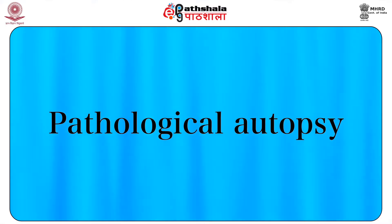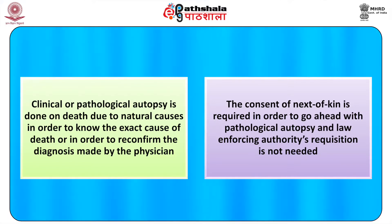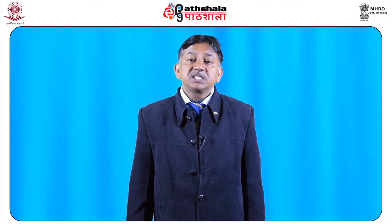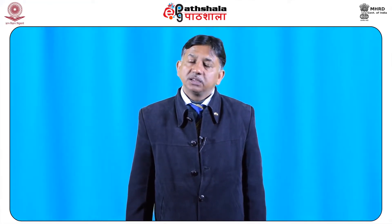The other type is the pathological autopsy or clinical autopsy. This is done on death due to natural causes in order to know the exact cause of death or to reconfirm the diagnosis made by the physician. Consent of the next of kin is essentially required, and law enforcing authority requisition is not needed. The hospital pathologist has access to all relevant information — case history, medical records, etc. His main aim is to find morphologic changes which explain the signs and symptoms of the existing disease and the effectiveness of treatment. This helps in determining cause of death, extent of natural disease, comorbidities, or any previously unrecognized disease condition. A pathological autopsy is generally research oriented.